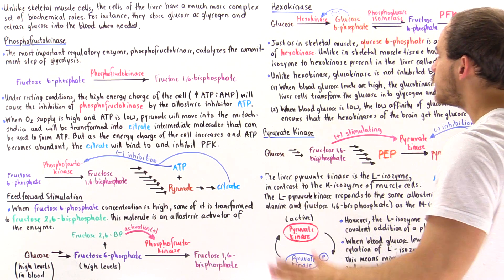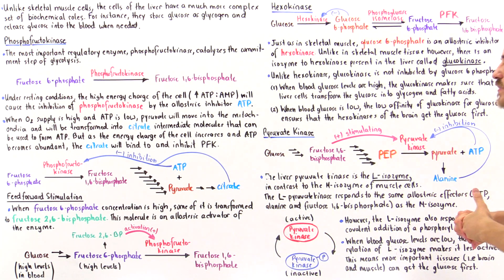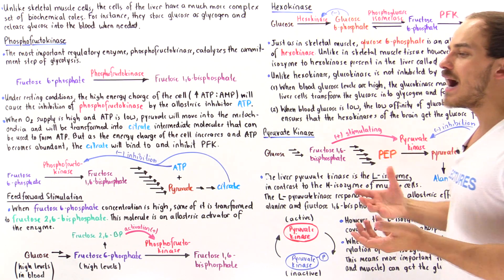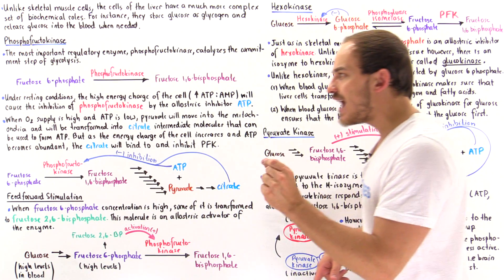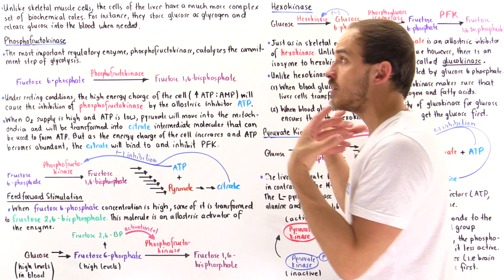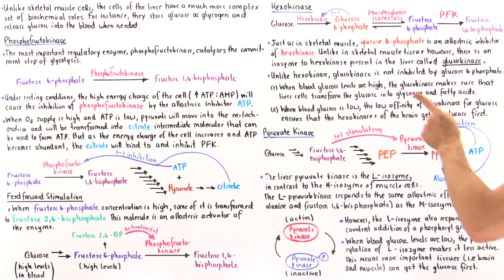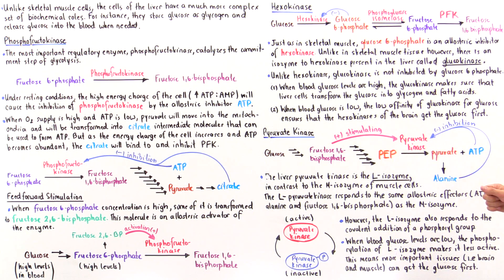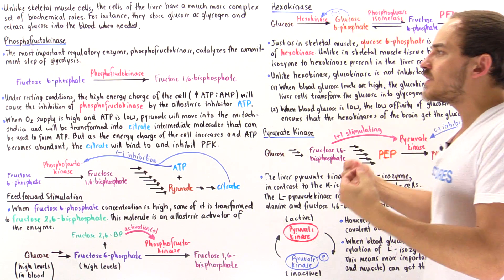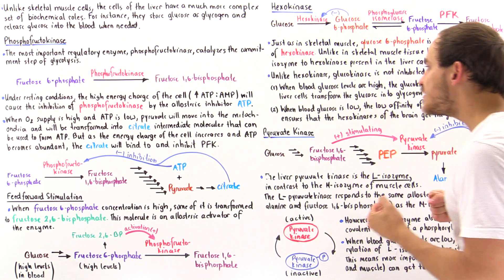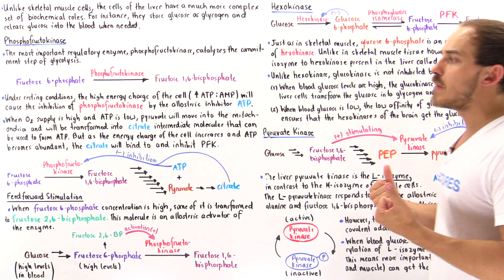Glucokinase is not inhibited by that molecule, and that does two important things. If we have a very high level of glucose in our blood, that glucose is toxic if it remains at that high level, and it's the job of the liver cells to uptake all that glucose to maintain the proper level. Inside the liver cells, we not only have hexokinase but also glucokinase — both isozymes work together to take in as many glucose molecules as possible and transform them into glycogen.